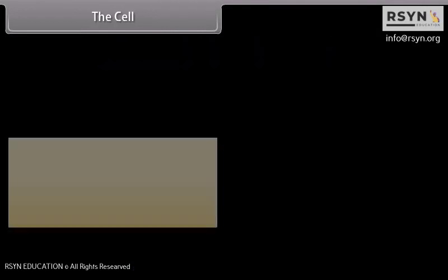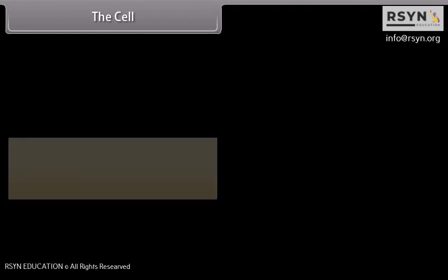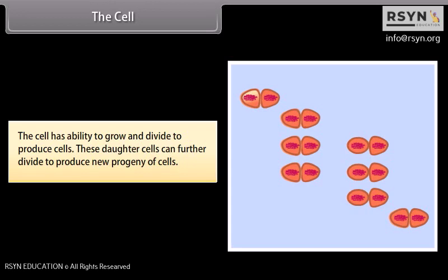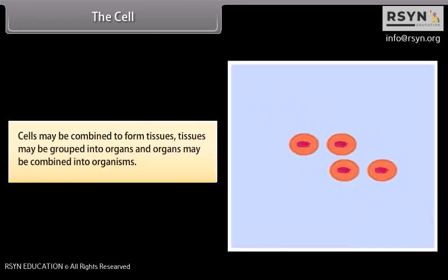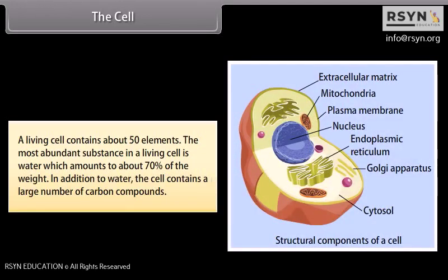The cell is the fundamental unit of life. It is too small to be seen with naked eyes and can be seen with the help of a microscope. Cells are packets of chemicals essential for life. The cell has the ability to grow and divide to produce daughter cells, which can further divide to produce new progeny of cells. Cells may combine to form tissues, tissues into organs, and organs into organisms. A living cell contains about 50 elements. The most abundant substance is water, which amounts to about 70% of the weight, along with a large number of carbon compounds.